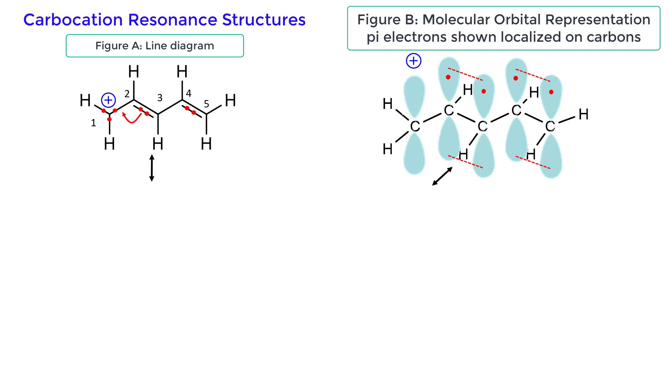After you have drawn the arrow, draw the new structure. The arrow has told you how the pi bond has moved. Carbon 1 now has four valence electrons and is neutral, and carbon 3 now has three valence electrons and is positively charged. The valence electrons for carbon 2 did not change. This can also be shown with figure B.